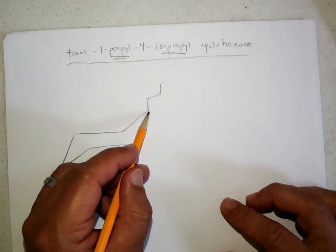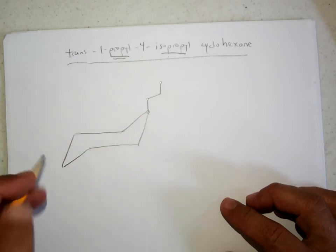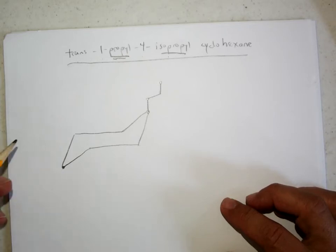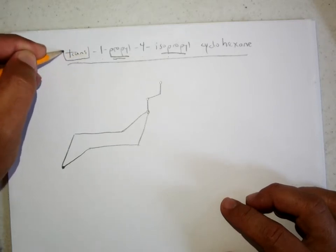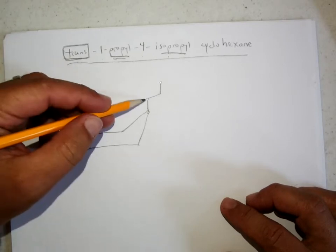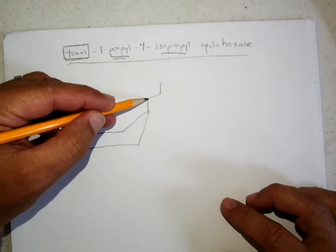So there's your propyl group on the first carbon in a high energy sterically hindered axial position, and then if we go two, three, four to the fourth carbon, that's where we're going to want to put the isopropyl. And we might say, oh, if we want high energy, we have to put this in an axial position, but we're not going to have a choice as to whether to put it in axial or equatorial, because the trans says that the new group has to be on the opposite side of the ring as the old group.